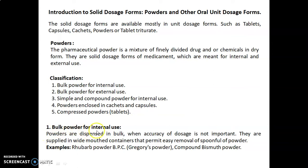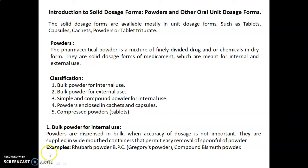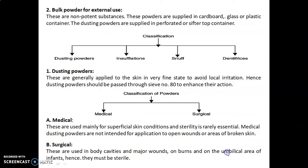First, we will discuss about bulk powder for internal use. Powders are dispensed in bulk when accuracy of dosage is not important. They are supplied in a wide-mouth container that permits easy removal of a spoonful of powder. Examples of bulk powder for internal use are rhubarb powder BPC, also known as Gregory's powder, and compound bismuth powder.